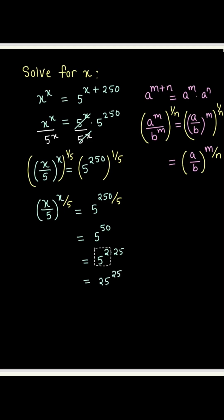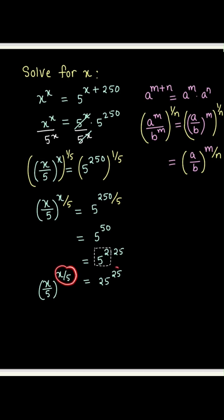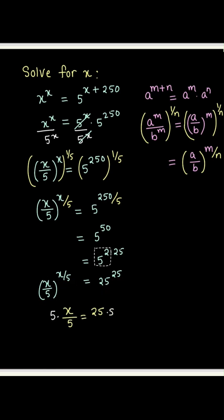So what do we get? We get x over 5 to the power x over 5 equal to 25 to the power 25. That implies the base x over 5 on the left-hand side equals the base 25 on the right-hand side, and the exponent x over 5 on the left-hand side equals the exponent 25 on the right-hand side. So we have x over 5 equal to 25. Multiply both sides by 5 and we get x equal to 125.